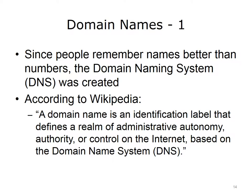No discussion of network communication is complete without some thought on domain names and their use. Networks and the Internet support the use of domain names. Imagine trying to navigate the Internet using IP addresses rather than names. www.schoolname.edu is an example of a domain name. Because people remember names more easily than numbers, network engineers devised the Domain Naming System, or DNS, to allow people to use names in conjunction with IP addressing. According to Wikipedia, a domain name is an identification label that defines a realm of administrative autonomy, authority, or control of the Internet based on the domain name system, or DNS.